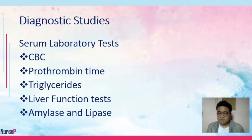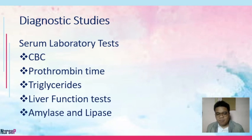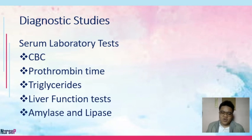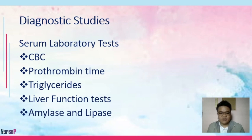Beyond the normal range for amylase and lipase, you would suspect pancreatitis — either acute or chronic — or pancreatic cancer. Amylase is necessary for carbohydrate metabolism and lipase for lipid metabolism. Pancreatic amylase is different from salivary amylase. If these enzymes are elevated, it indicates a pancreatic problem.